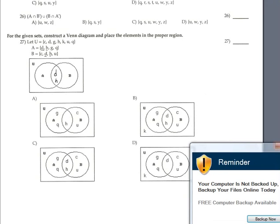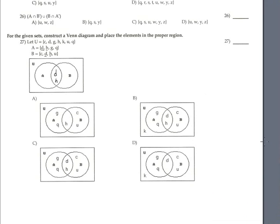The rest of the elements in A are G and Q, and in B we have C and U. And this is the answer.